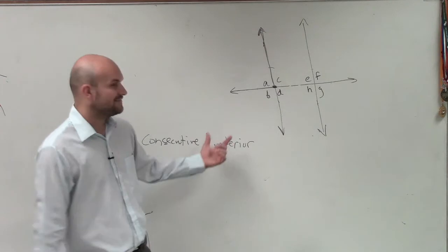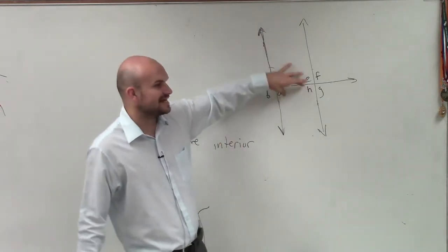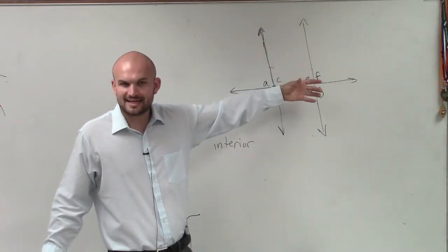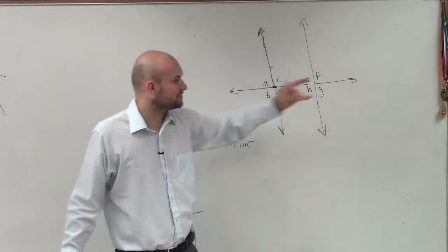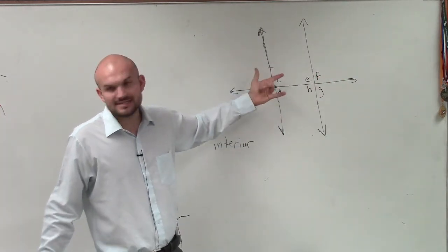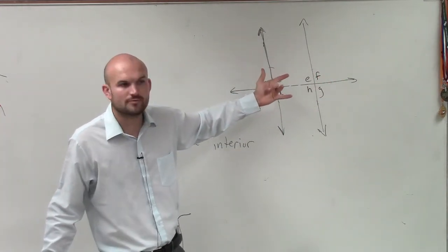But we're talking about consecutive interior. That means angles that are on the inside that are consecutive, one next to the other. These, c and d, these are a linear pair. They don't prove parallel lines.